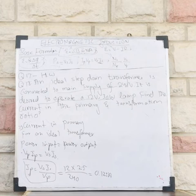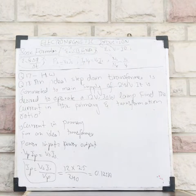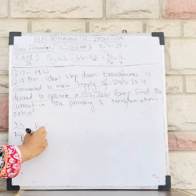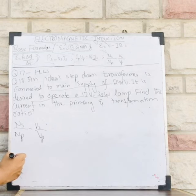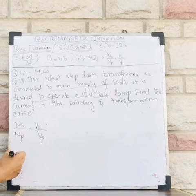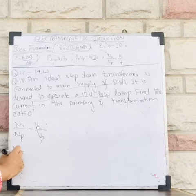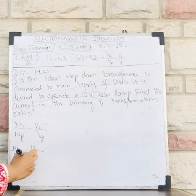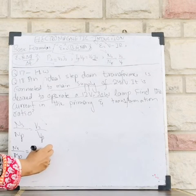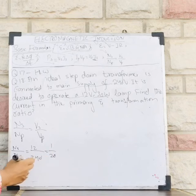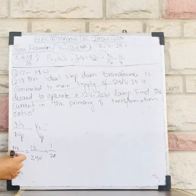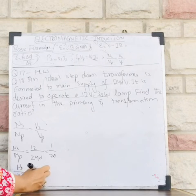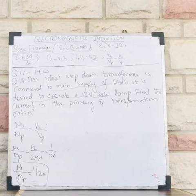Now let's calculate the transformer ratio. I know that Ns divided by Np equals Vs divided by Vp. Putting in values: Vs is 12 and Vp is 240. After simplification, Ns divided by Np equals 1 divided by 20. That is the transformer ratio.